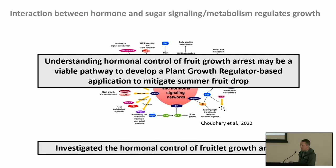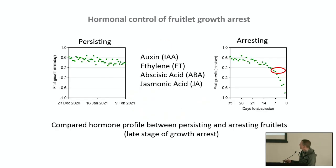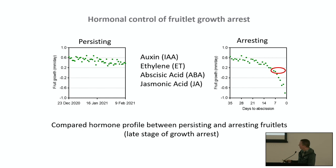In this next section, I'll talk about our work investigating the hormonal control of fruitlet growth arrest. We looked at a set of hormones — auxin, ethylene, abscisic acid, and jasmonic acid — and compared these hormone profiles between persisting fruits and fruits that switched from a normal to a low growth rate, focusing on a relatively late period of growth arrest.